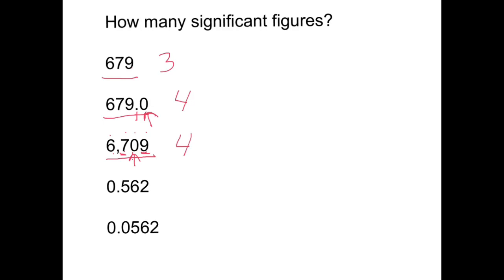In the next example, I have three non-zero digits and a leading zero with no non-zero digit in front of it, so that zero is not significant — giving three significant digits. For 0.0562, there are two zeros before the first non-zero digit that are not significant, though the leading zero is needed as a placeholder. So again, only three significant digits: 5, 6, and 2.